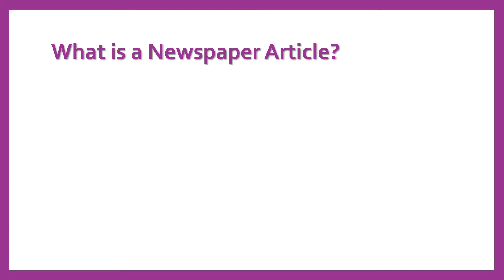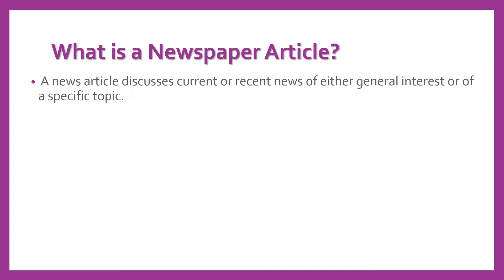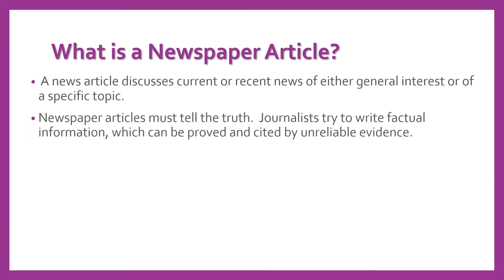First of all, what is a newspaper article? A news article discusses current or recent news of either general interest or of a specific topic. Newspaper articles must tell the truth. Journalists try to write factual information which can be proved or cited by unreliable evidence.